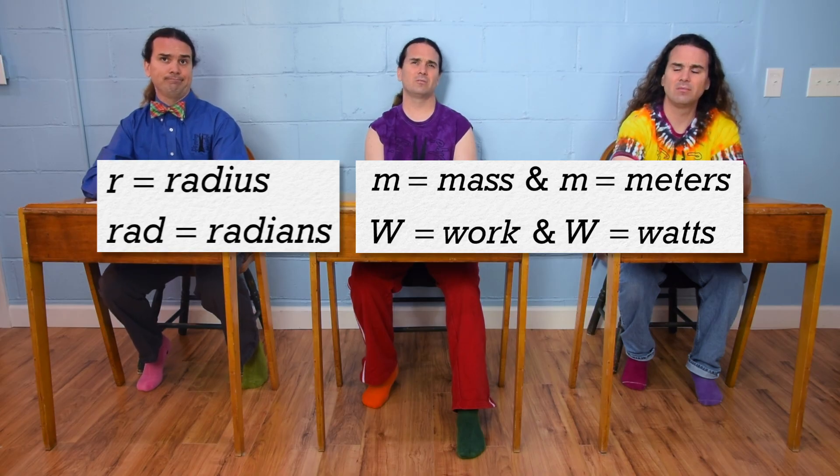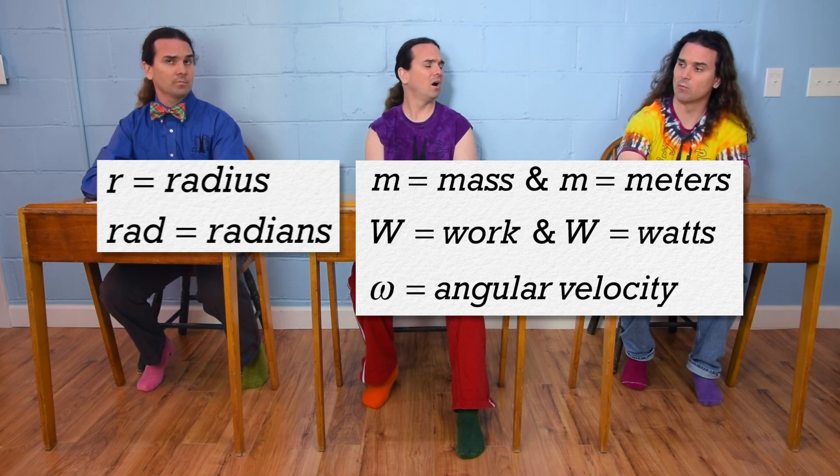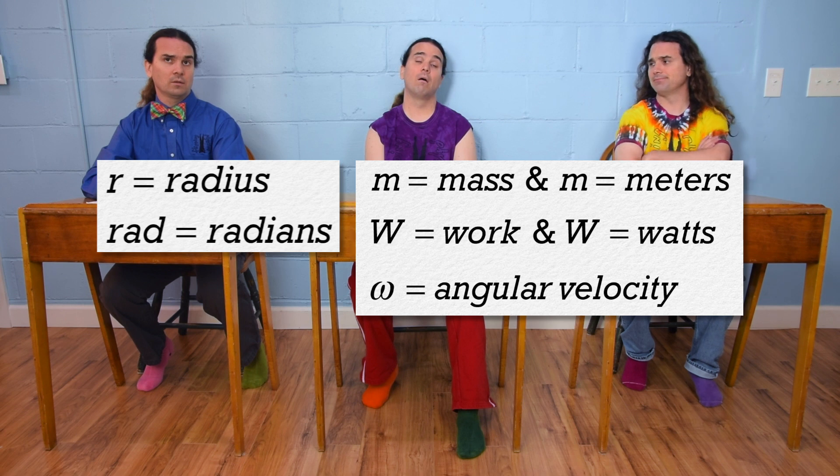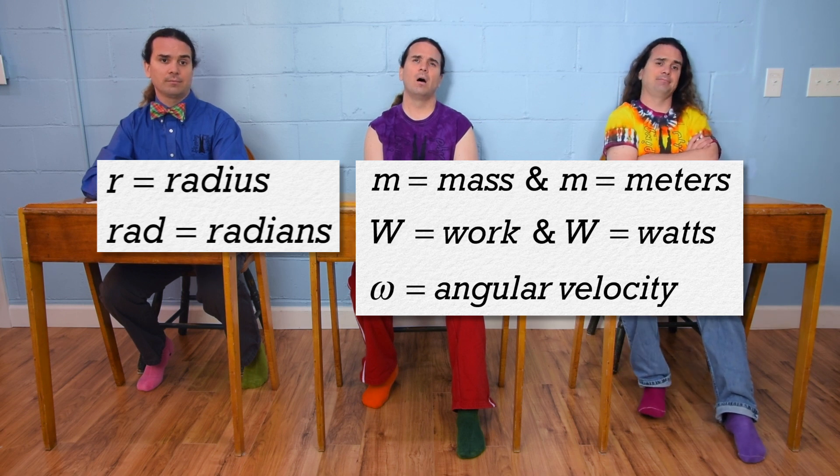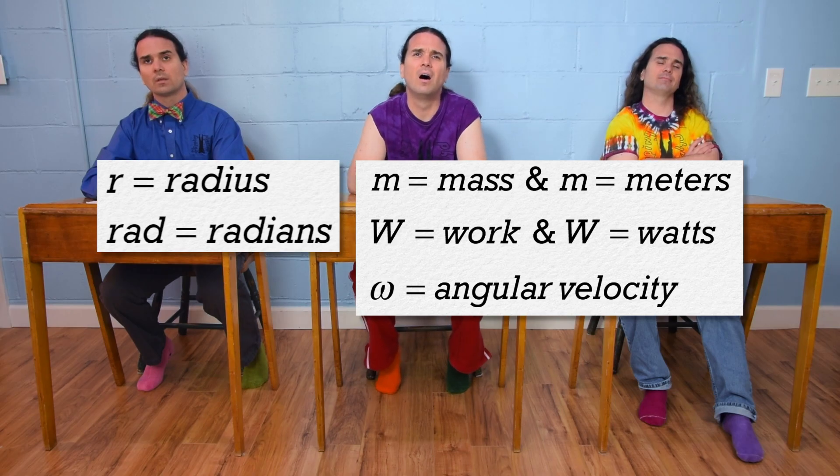And we also use W for angular velocity. Actually, no, that's an omega, not a W. Mr. P, okay, yes. In physics, there are many examples where the same letter is used to represent multiple variables and units.